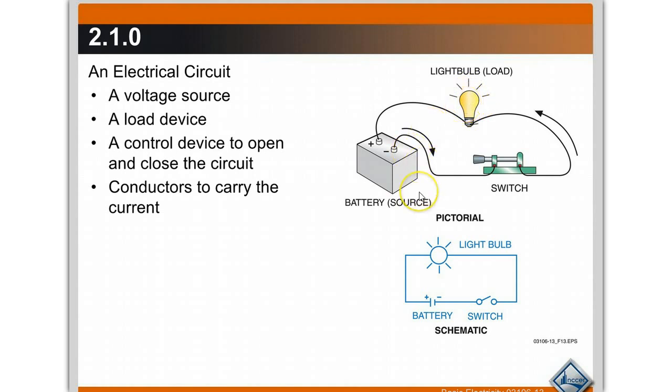If the light bulb fails, the light bulb doesn't light. So four things that can go wrong in this circuit. It's either going to be the voltage source, the load device, the controls which control that device, or the wires connecting it to make a complete circuit.